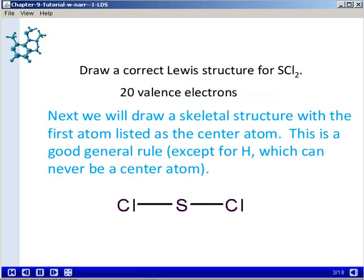Next, we'll draw a skeletal structure with the first atom listed, the one in the least number, the sulfur, as the central atom. And this is a good general rule, except for hydrogen, that can never be a central atom. Notice also that when we draw the skeletal structure, we've connected the atoms with single bonds.